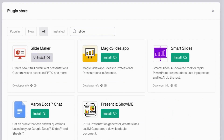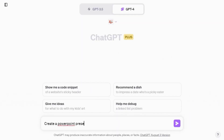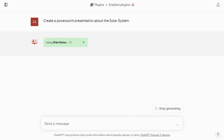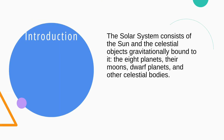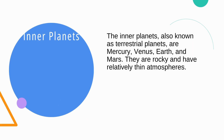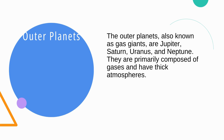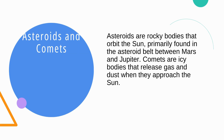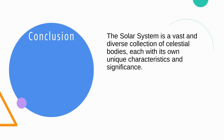I also tested another plugin, Slide Maker, following the same steps to install and activate it. The results are similar to Smart Slides; however, it's worth noting that Slide Maker doesn't produce any images but offers slightly more detailed content. Both plugins seem to have limited customization options for themes and formatting. It's clear that there is room for improvement for ChatGPT to catch up with other AI presentation makers that offer high-quality results for free.